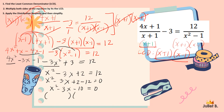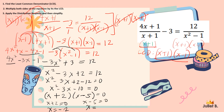Factoring x squared minus 3x minus 10: we need factors of 10 with signs that give negative 3 when added. Negative 5 times positive 2 is negative 10, and negative 5 plus 2 is negative 3. So the factors are x minus 5 and x plus 2. Equating to 0: x equals negative 2 and x equals 5. The possible values are negative 2 and positive 5.